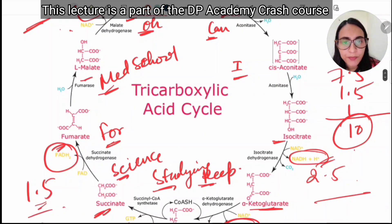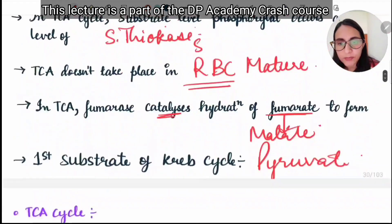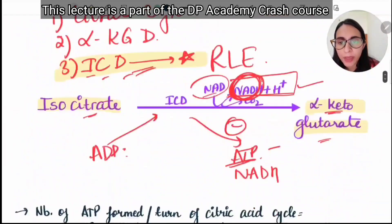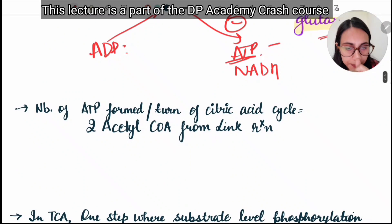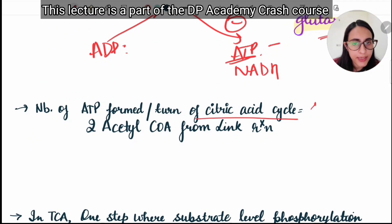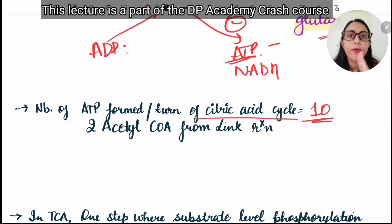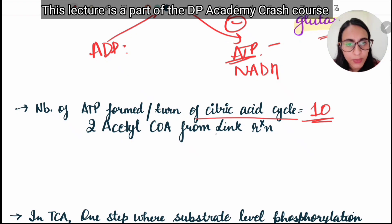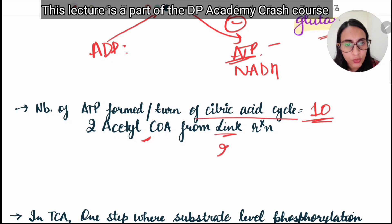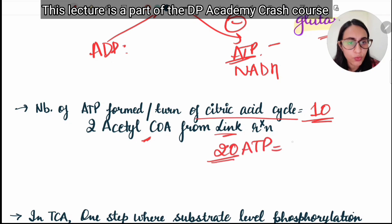In total: 7.5 + 1.5 + 1 = 10 ATPs per turn of the citric acid cycle. Since 2 acetyl-CoA are produced from 1 glucose via the link reaction, we get a total of 20 ATPs from 1 glucose through the TCA cycle.